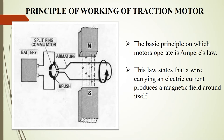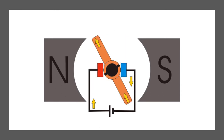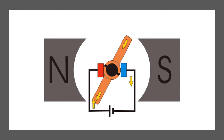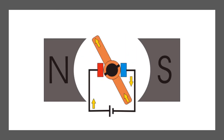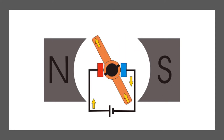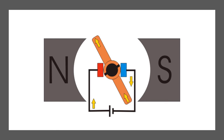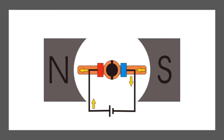The basic principle on which the motor operates is Ampere's Law. The law states that a wire carrying an electric current produces a magnetic field around itself. The presence of current creates a magnetic field around the wire. Since the loop itself has become a magnet, one side of it will be attracted to the north pole and the other side will be attracted to the south pole of the magnet. The loop will thus begin to rotate.